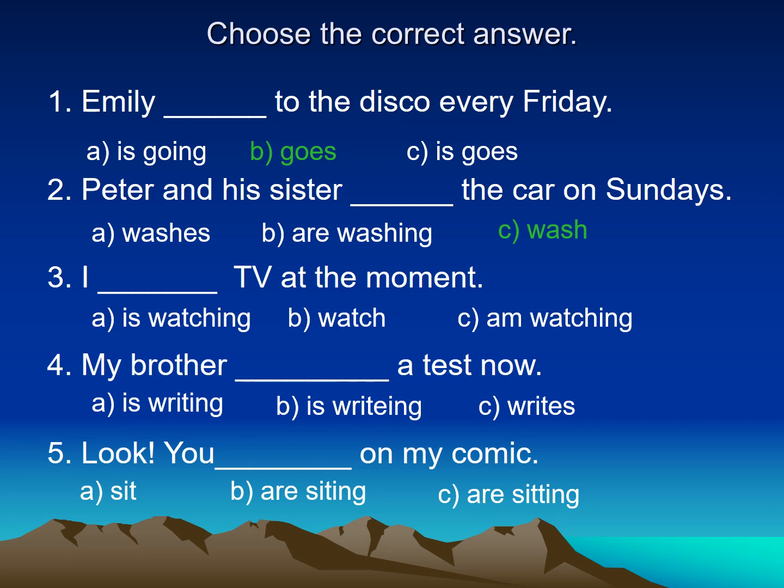Number three: I ___ TV at the moment. I'm speaking about what I'm doing right now, so I use the present continuous, which consists of two parts — verb to be (am/is/are) plus ING added to the verb. So: I'm watching TV at the moment.